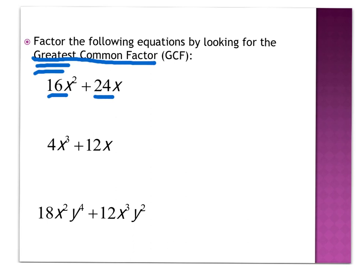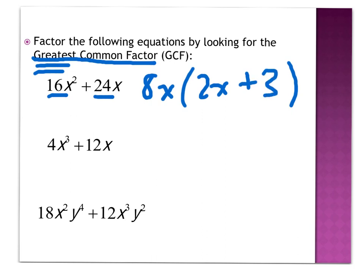In this problem, I'm looking for what I can divide both of these terms by. I can divide both 16 and 24 by 8. I'm looking for the greatest common factor — I could divide both by 4 or 2, but 8 is the biggest number that divides into both of them. From a variable standpoint, I can divide both by x, so 8x becomes my common factor. Dividing 16x² by 8x gives 2x, and 24x divided by 8x is 3. So this equation is now simplified by finding the greatest common factor.